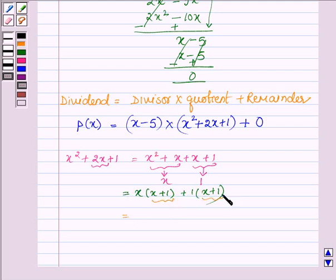Taking x plus 1 common, we have x plus 1 and here we are left with x and here plus 1. So, we have P(x) is equal to x minus 5 and x square plus 2x plus 1 can be written as x plus 1 into x plus 1.